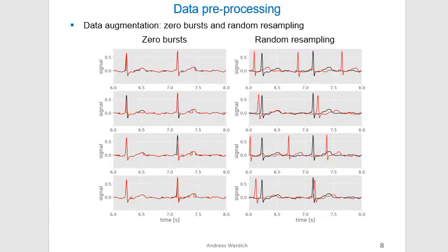For data augmentation, we use zero-bursts and random resampling. Training without data augmentation causes severe overfitting, and augmentation has been shown to reduce it. Zero-bursts simulate the loss of contact of a lead by setting the signal to zero randomly. Random resampling simulates different heart rates by squeezing or stretching the sequences.